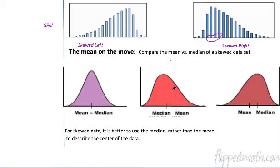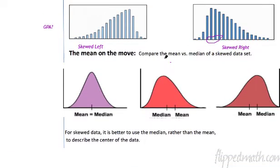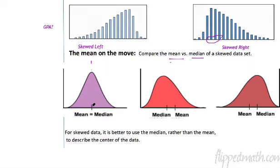So what happens when we have skewed data? Let's look at the mean and the median. The mean: add them all up and divide. The median: the value in the middle. If you have a symmetric curve, there's an equal number of values on the left and right side of the median, so the mean and median kind of cancel each other out — the mean will equal the median. This happens with a symmetric distribution.